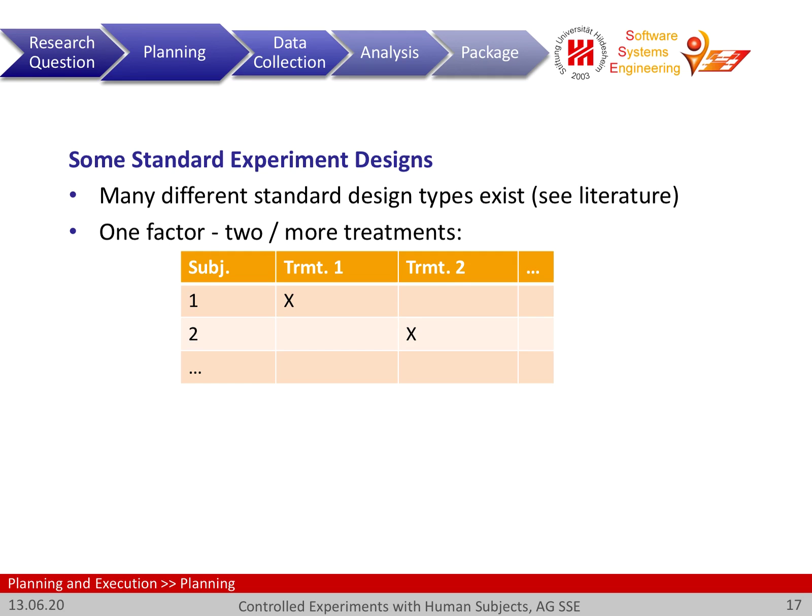There are some standard experimental designs, quite a number of which have been discussed in the literature. We will discuss here only the two most common design types. The first is a so-called one-factor, two-or-more-treatment design. One factor means there is one independent variable that we want to vary by giving different treatments for it, so we have two or more expressions of this factor.